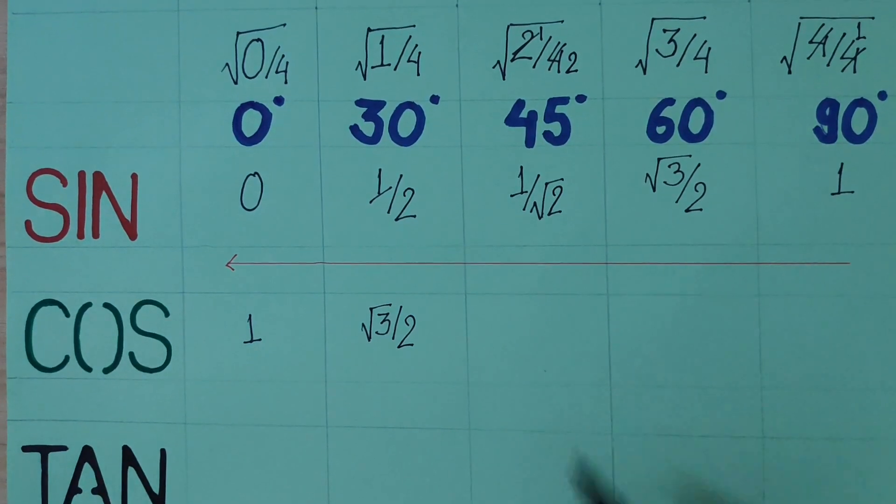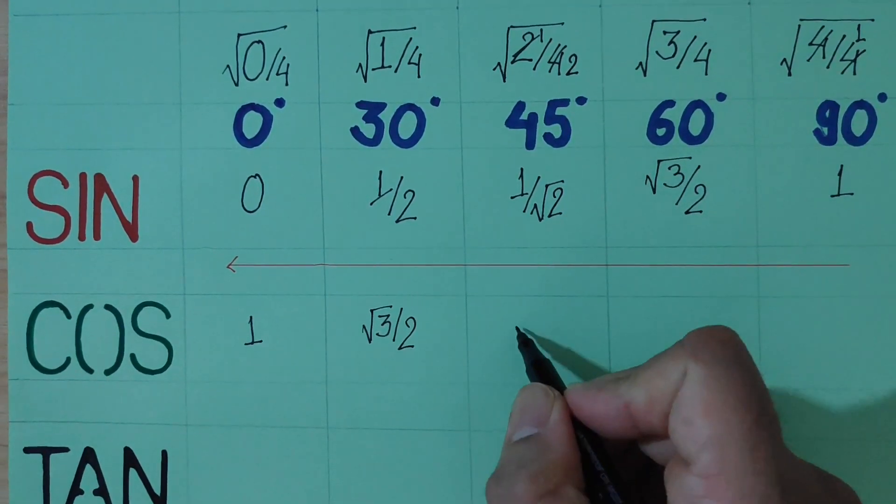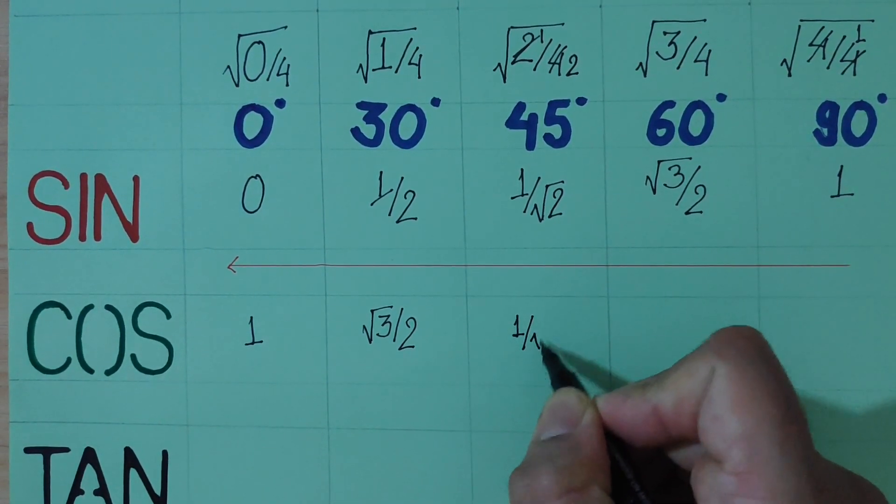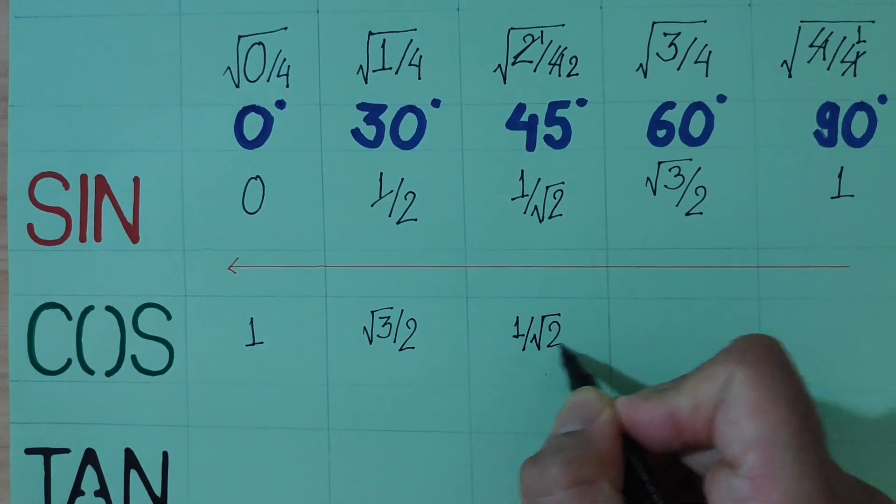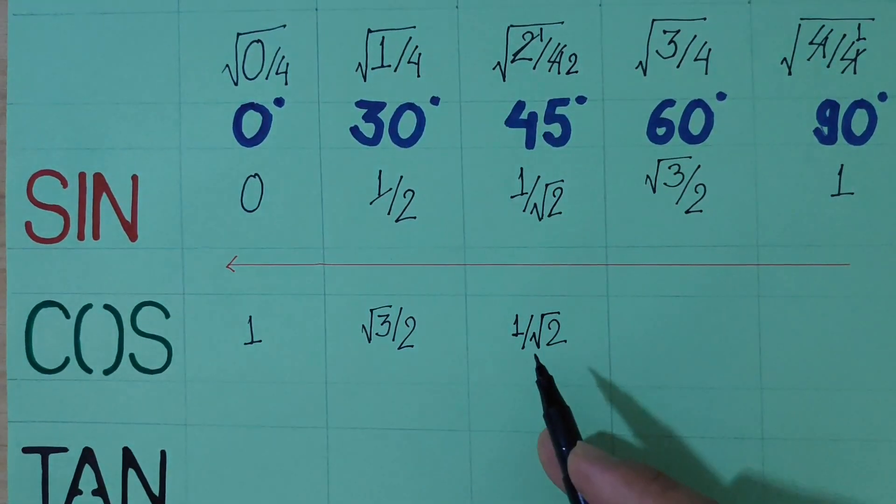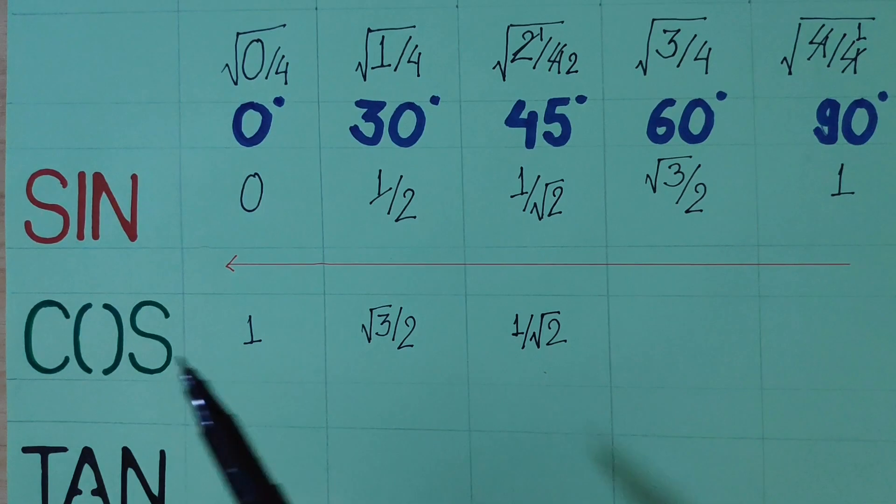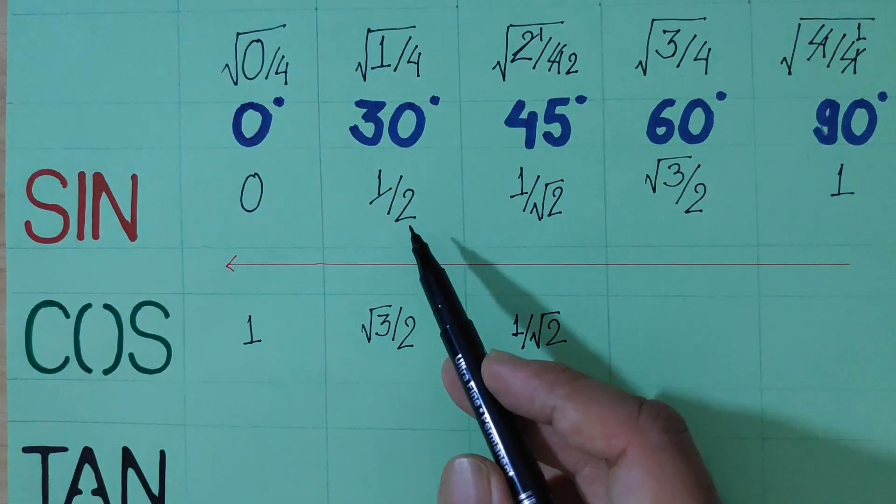Sin 45 is 1 by root 2, cos 45 is 1 by root 2. Now sin 30 is 1 by 2.